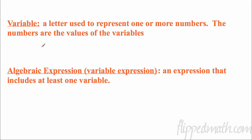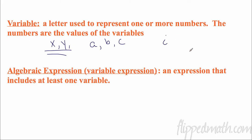A variable is a letter used to represent one or more numbers. The numbers are the values of the variables, and we usually use letters. X is a big one, Y we use a lot as well — probably the two most popular, but they can be any letter: A, B, C. There are some we try to avoid. I don't like to use I, L, or O. These look like the number one or the number zero, and I don't want you to get confused. I'll try to avoid them, and probably J as well, but you can use them.